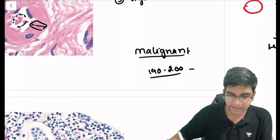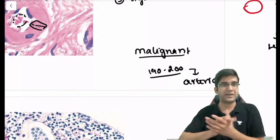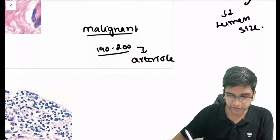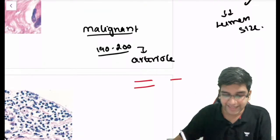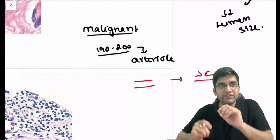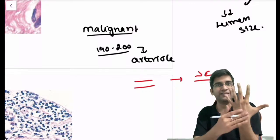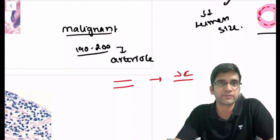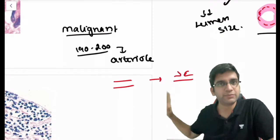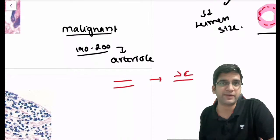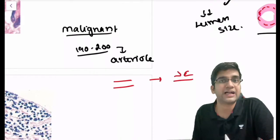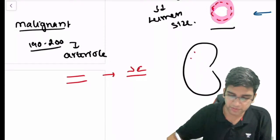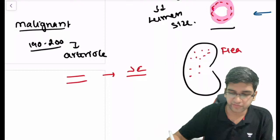At around 190-200 mmHg, the same tiny arteriole is affected. In malignant hypertension, the arteriole cannot tackle this blood pressure — it will rupture. When the arteriole ruptures in skin, you use the term petechiae or purpura. The same applies in the kidney: on the surface of the kidney, you'll have petechiae and purpura — and we use the term flea-bitten kidney, which is an important MCQ point. So the arteriole ruptures due to extremely high blood pressure, giving a petechiae/purpura appearance on the kidney surface.